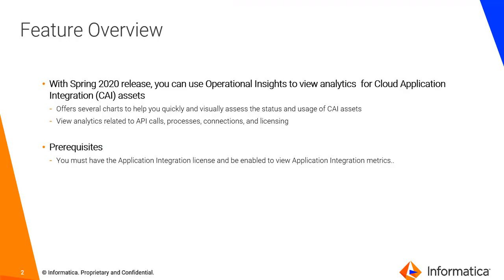With this feature, you would be able to monitor Cloud Application Integration Assets. This would be available as part of Operational Insights, where you will have a separate page for Cloud Application Integration Assets monitoring, and it will offer several charts to help you quickly and visually assess the status and usage of CI assets, and view analytics related to API calls, processes, connections, and licensing. There is one prerequisite for this feature: you must have the Application Integration License and be able to view the Application Integration Matrix. With that, let's move on to the demo.